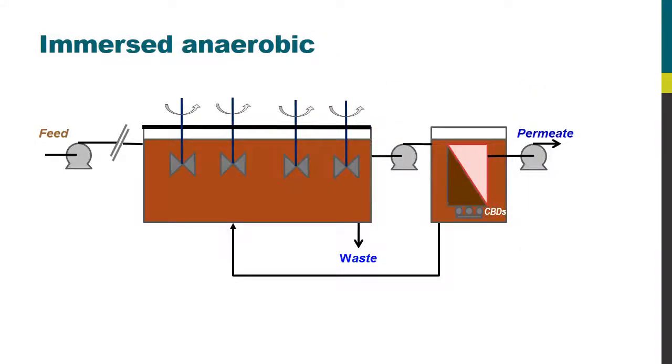Now for the immersed anaerobic system, the sidestream membrane is replaced with a membrane immersed in a tank. That tank has to be sealed in the same way as the process tank in order to retain all the biogases, and that membrane has to be scoured as with the aerobic immersed process. But in this case, air can't be used for that task because air contains oxygen and we have to maintain anaerobicity. So instead, the off gas from the process has to be used in order to scour the membrane.